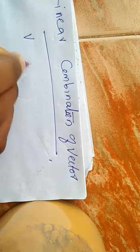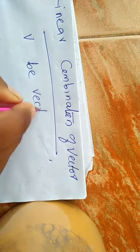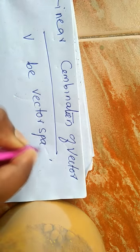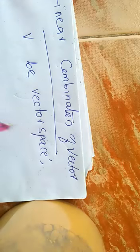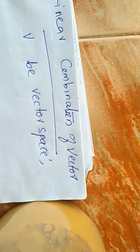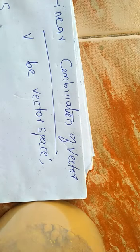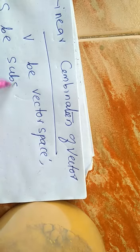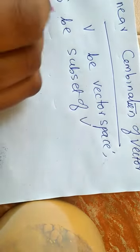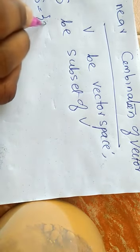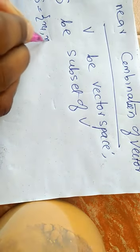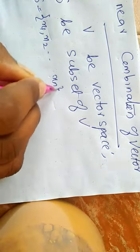The next topic is linear combination of vectors. Let V be a vector space. We take S, a subset of V, where S contains some vectors x1, x2, and so on, up to xn.